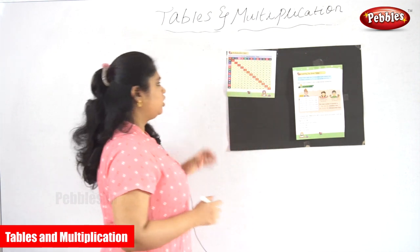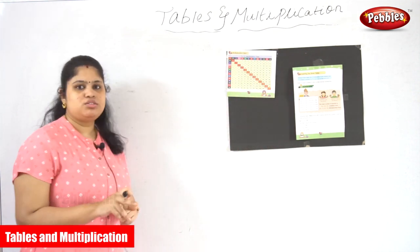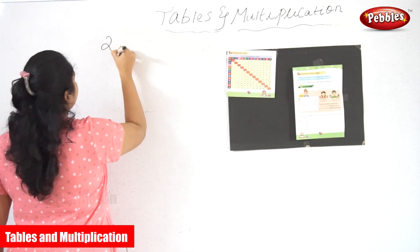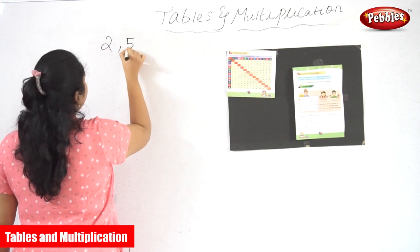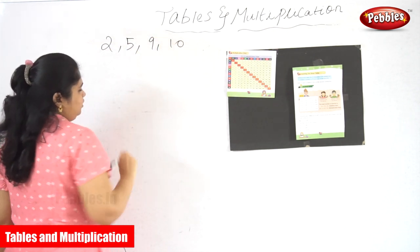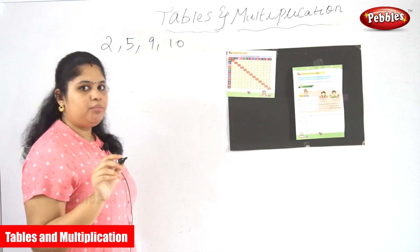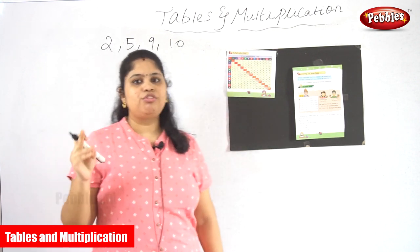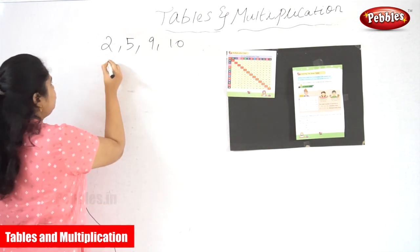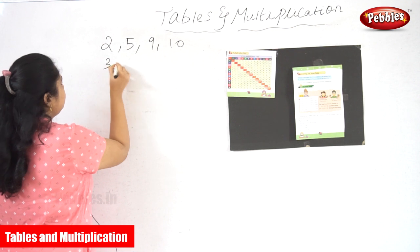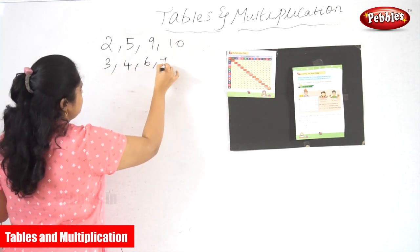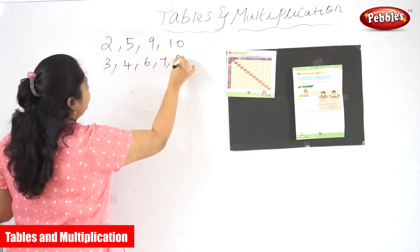So what are the tables? So far we have seen 2, 5, 9 and 10. So we have completed 2, 5, 9, and 10. So what are the remaining tables we have to learn? 3, 4, 6, 7, and 8.